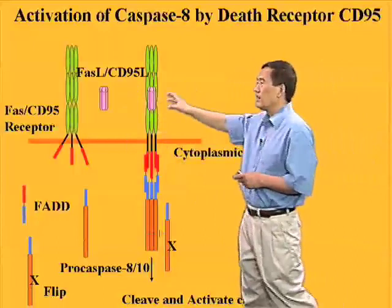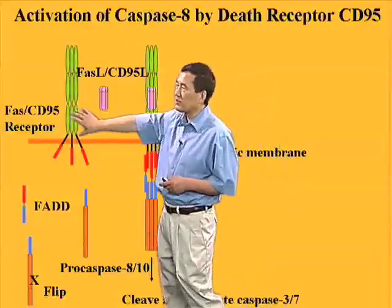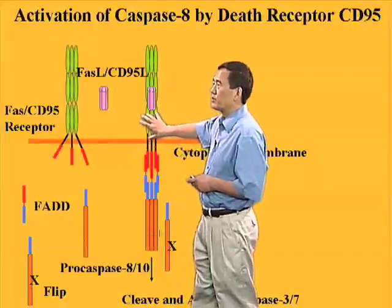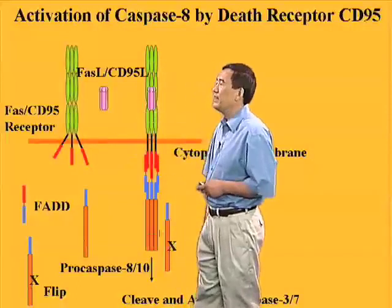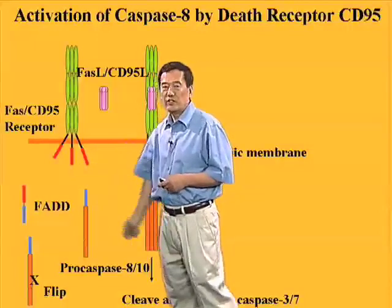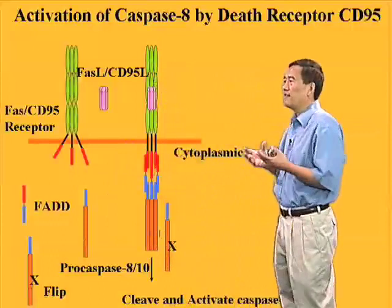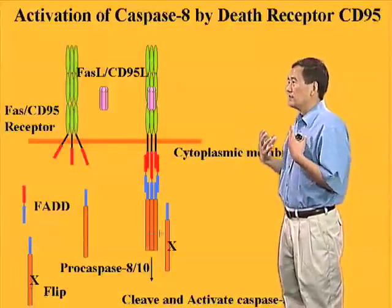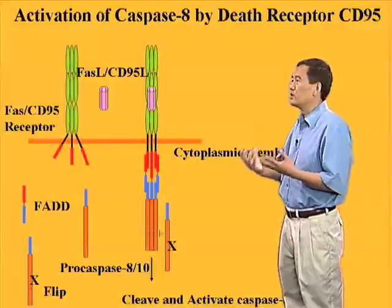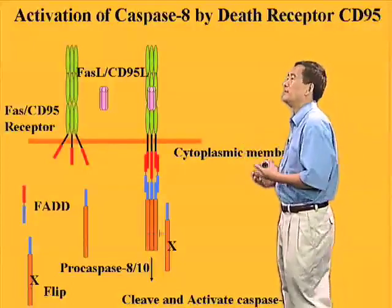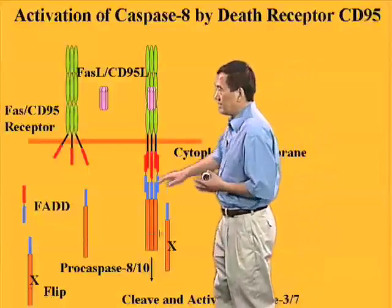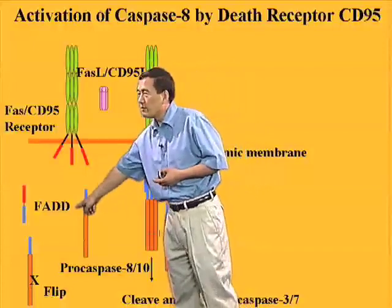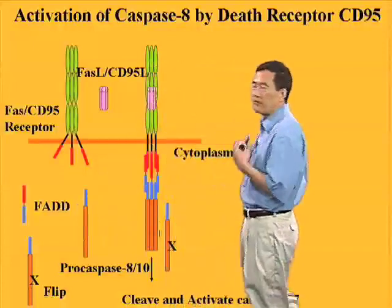These cytokines bind specific receptors on the cell membrane and activate these receptors by trimerizing. These receptors have a unique feature at their C-terminus: a domain called the death domain, which is also a protein-protein interaction domain. Once a bound ligand activates the receptor, it is able to recruit adapter proteins, for example the FADD protein.